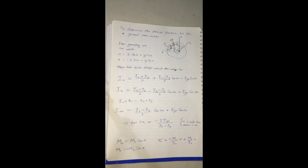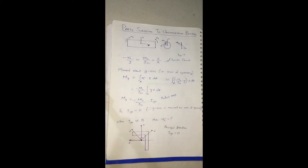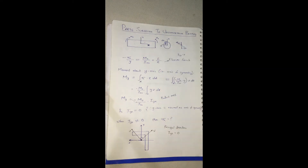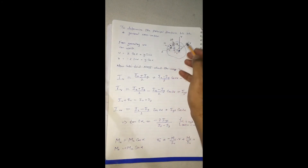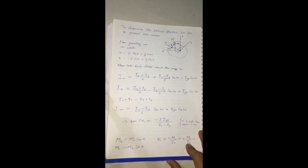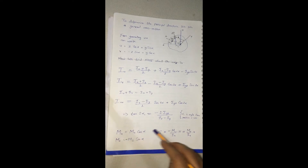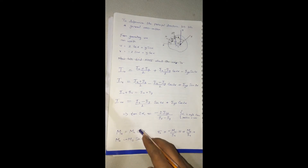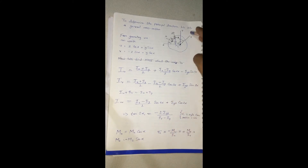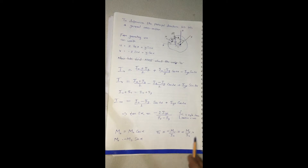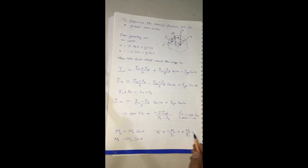In order to determine the stresses, we found the components of Mz in terms of U and V directions: Mu equals Mz·cos(alpha) and Mv equals minus Mz·sin(alpha). Since these are the principal axes where the product moment of inertia is zero, we can determine the stresses using the flexural formula: sigma_x equals minus Mu/Iu times v, plus Mv·u/Iv.